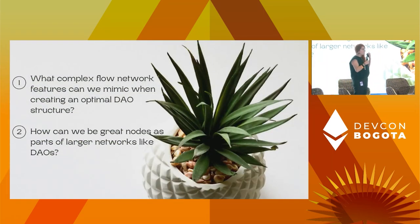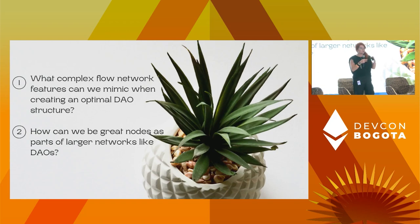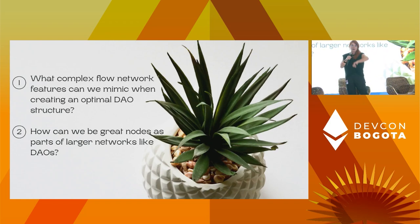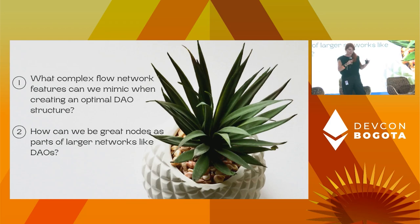What we're really looking at in this conversation of where biomimicry and DAOs might intersect — what might benefit DAOs from biomimicry — is what complex flow networks feature that we can mimic, and then how can we be great nodes in that network. You have the individual and you have the collective, always. We cannot be without each other, because nature, as we've seen over 3.8 billion years, makes that clear.